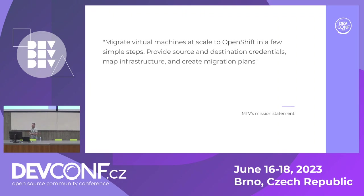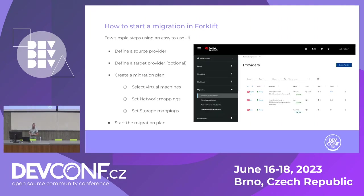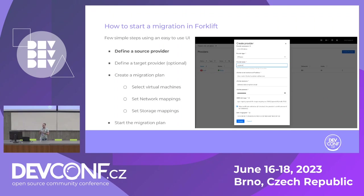With just a few simple steps, let me show you how simple they really are. On the right-hand side of this slide you see the Forklift UI — the new UI integrated within the OKD or OpenShift console. The process of migration using this UI looks as follows: first, we need to define a source provider. In this slide you see the complete form for defining vSphere as a source provider.